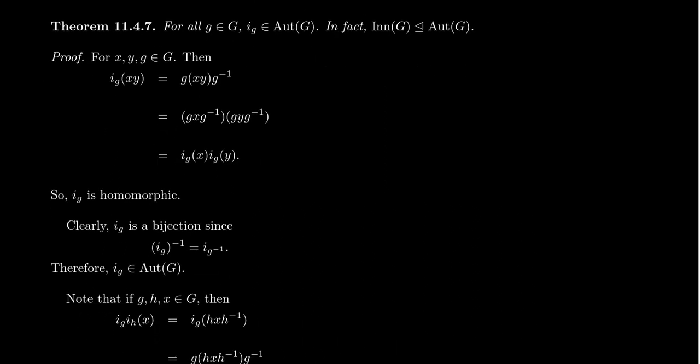Let's first prove that conjugation is an automorphism — we need to prove it's a bijective homomorphism. We'll prove the homomorphic property first. We're conjugating by element G, and X and Y are two other elements being conjugated. We want to prove I_G(XY) = I_G(X)·I_G(Y). Well, I_G(XY) gives us G·XY·G inverse. We insert an identity element in the middle: G·X·E·Y·G inverse.